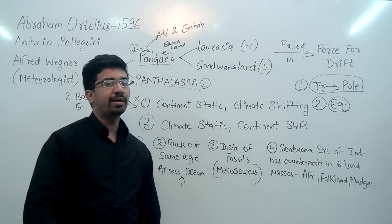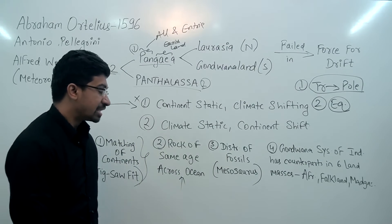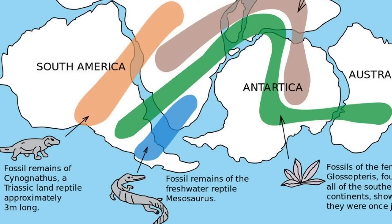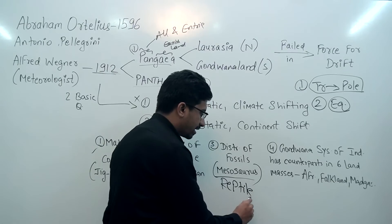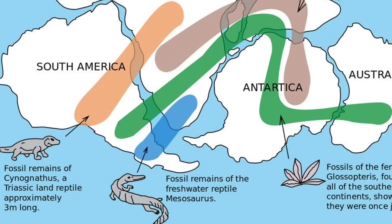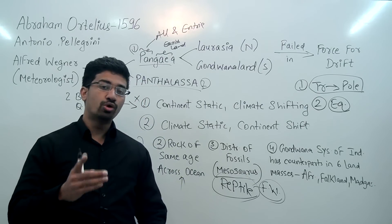This is a very important point: the distribution of fossils. Just as you can see in the image — there is a reptile named Mesosaurus. This Mesosaurus was found on the east side of South America and the west side of Africa. How can this be? There is a wide sea between them. You might ask why a reptile couldn't cross it — but this reptile is a freshwater animal. It cannot survive in a saline sea. So the only explanation is that these were once a single connected landmass.